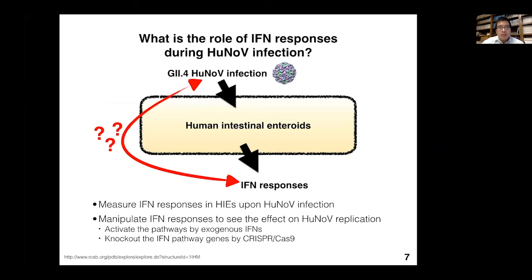The big picture of my study is to determine whether the interferon response plays an important role during human norovirus infection. We used the most prevalent strain, GII.4, to infect human intestinal enteroids and measure whether interferon response is induced. If we detect interferon response, we then want to see how it shapes human norovirus replication—either by artificially activating the pathway with exogenous interferon, or inhibiting it by knocking out critical pathway genes like the interferon receptor or downstream STAT1 transcription factor.